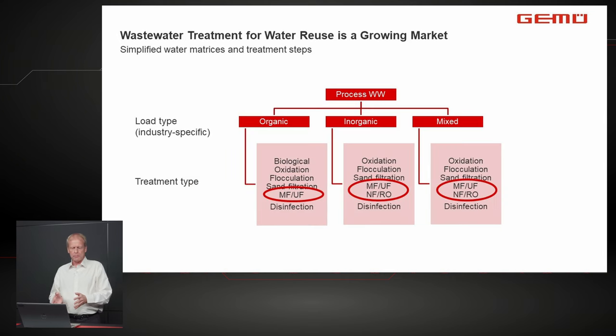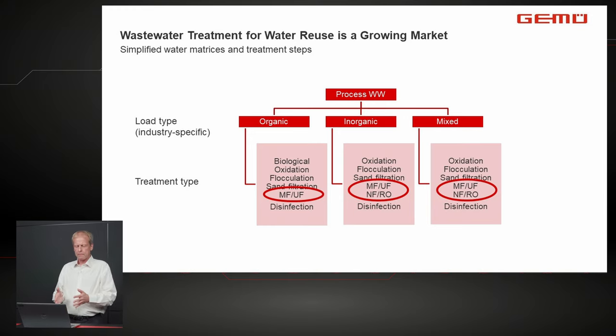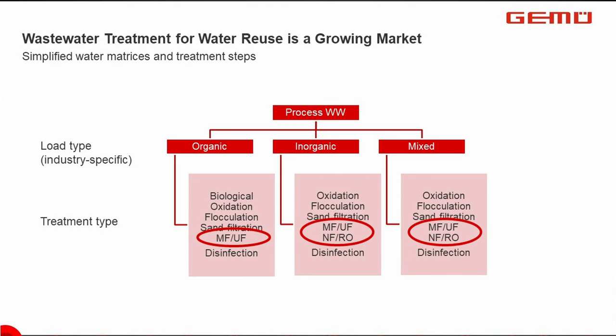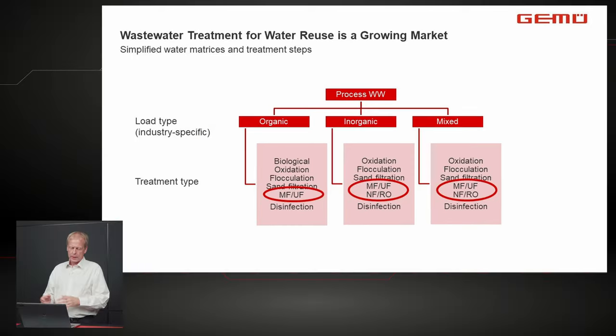The treatment of wastewater depends on the load type. Organic load requires biological treatment as a first step, followed by membrane filtration for reuse. Inorganically loaded water is mainly treated with membrane filtration systems — microfiltration, ultrafiltration, nanofiltration. Mixed water requires both biological and membrane treatment. The treatment approach always depends on the water type.